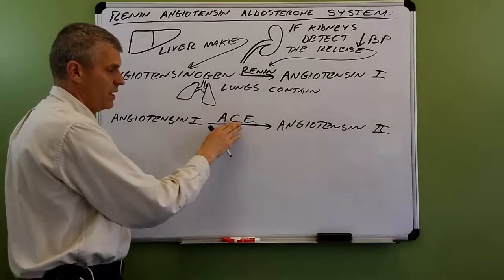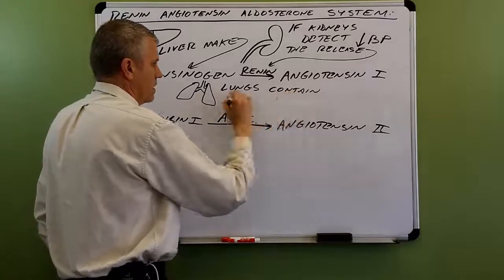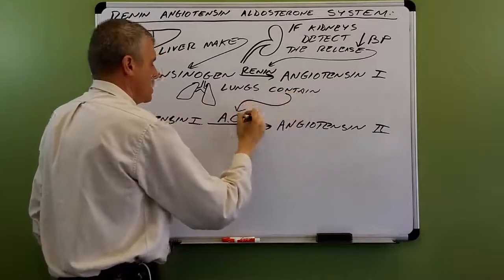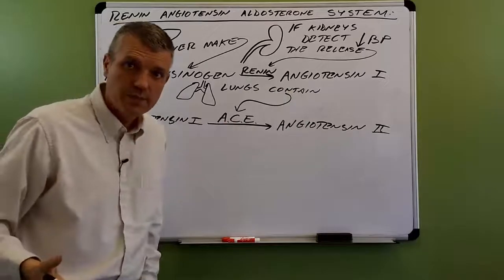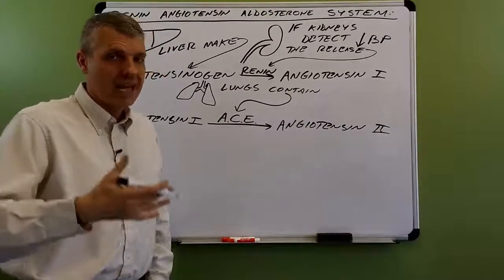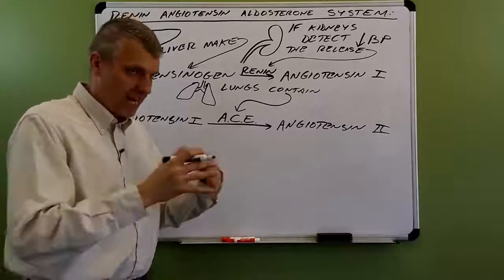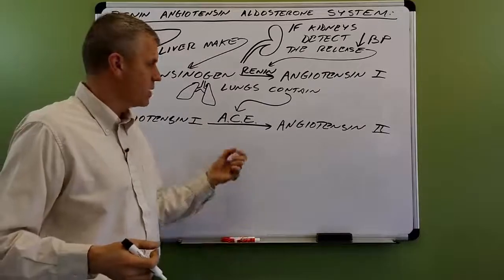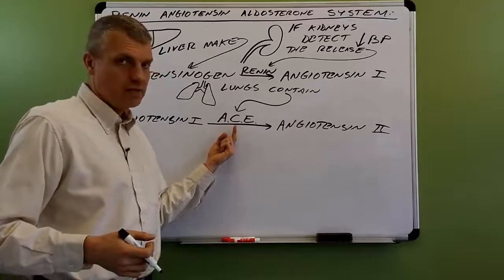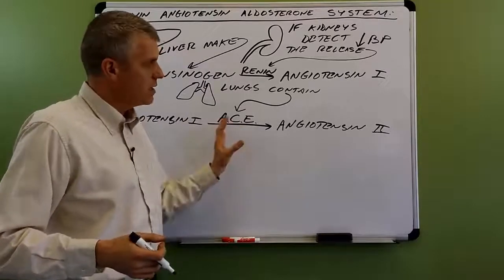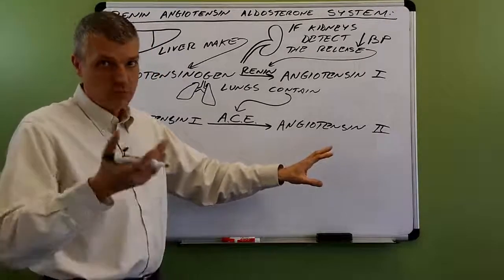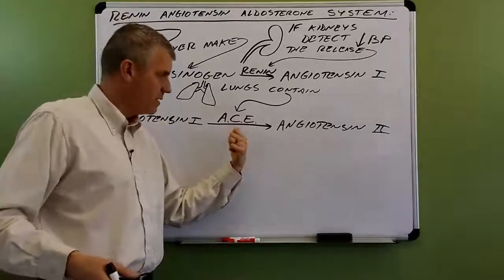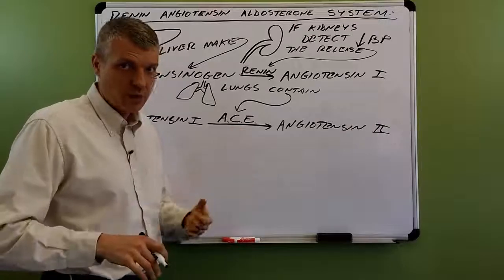You may have heard of ACE before. The lungs contain ACE. You may also have heard of drugs called ACE inhibitors — a broader category of drugs that inhibit this enzyme. The effects of angiotensin-2 are to bring blood pressure up, so if you inhibited this enzyme, you would help keep blood pressure lower.